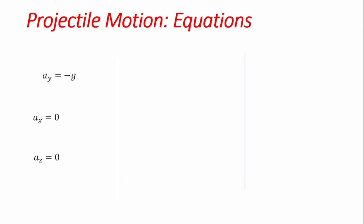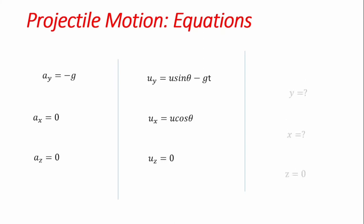To recap what we've gotten: the accelerations are ay equals -g, and ax and az are both zero. For velocity, uy equals u sin theta minus gt, ux equals u cos theta, and uz is zero, because there are no components of velocity or acceleration in the z-axis.